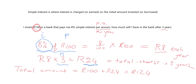To get the total interest earned I say: take the interest rate times the amount invested (P) times the number of years (N). So I × P × N gives me the total interest earned after three years. To get the total amount I take the amount I invested and add on the interest.